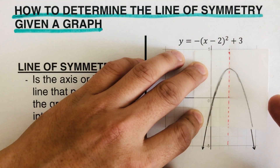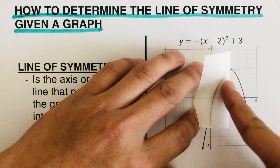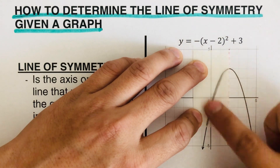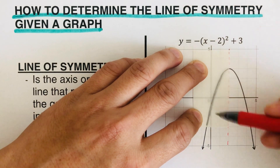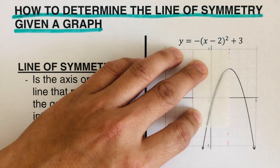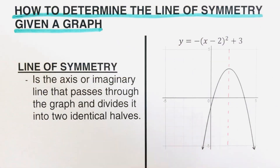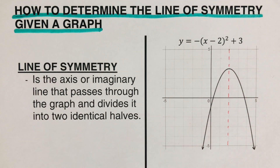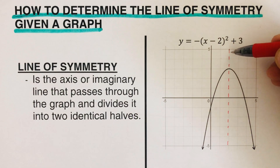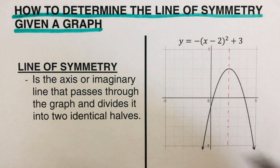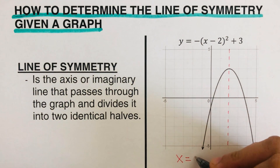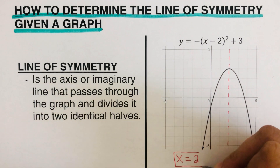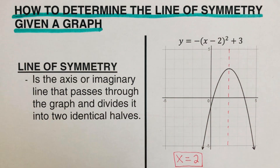If we were to fold this patty paper, both branches of this graph from this line of symmetry — the right branch and the left branch — would match up. So this line of symmetry right here divides this graph into two identical parts. If we were to find the equation for this line of symmetry, this would be x is equal to two.